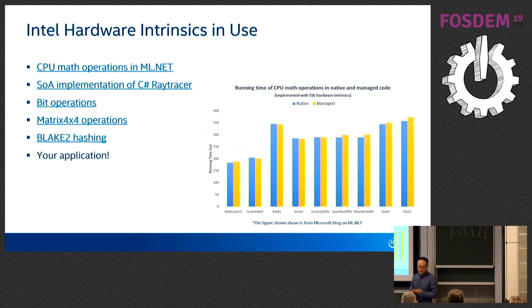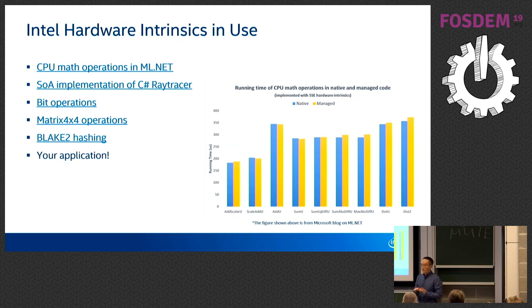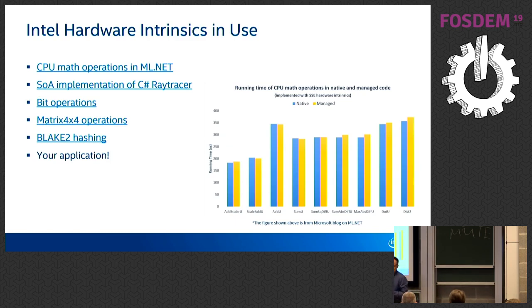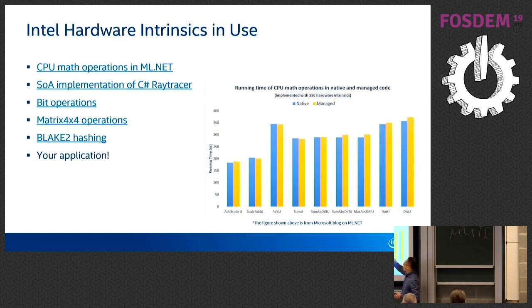Who's using Intel hardware intrinsics today? One interesting use is in the CPU math operations in ML.NET — Microsoft's machine learning library. They used to have a native implementation of CPU math operations for their machine learning library, and one of the things they did was use Intel hardware intrinsics to port those to C#. This chart shows the performance of native versus C#, and the bars are very similar in height, meaning their performance is pretty similar. So what's the point of bringing them to C#?